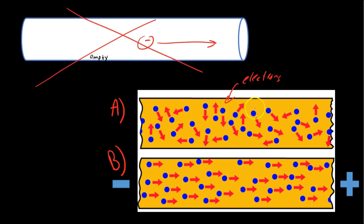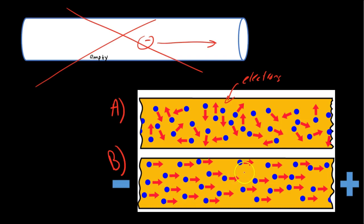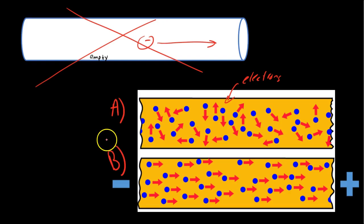Electrons just kind of wander around — they can drift. In part A, we see them randomly moving back and forth in no particular direction. When you have a circuit, when you have a battery, what that does is it makes one end of that wire have a negative charge and one end have a positive charge. We know what electrons do with opposite and like charges. The battery's job is to get this randomly drifting set of electrons to start marching, to start moving in one particular direction. That's what a battery does — that's what the outlets in your walls do. They don't supply the electrons; they just start making those electrons move in a particular way.